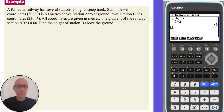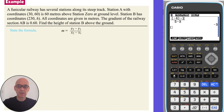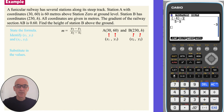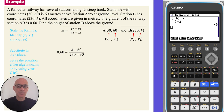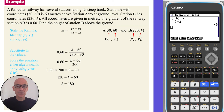In this question, we're asked to find the height of station B above the ground — effectively, we have to find the value of h. We're told the gradient of the railway section AB is 0.60. We begin by writing down the gradient formula, identifying the points as shown, and substituting the values into the formula to give an equation in h. We can either solve the equation algebraically, giving h equals 180, or solve it on the calculator.